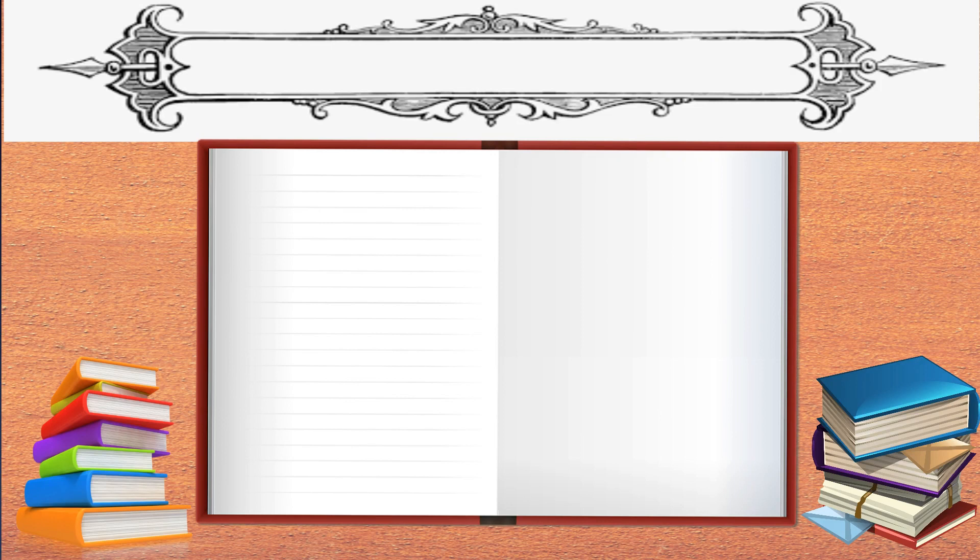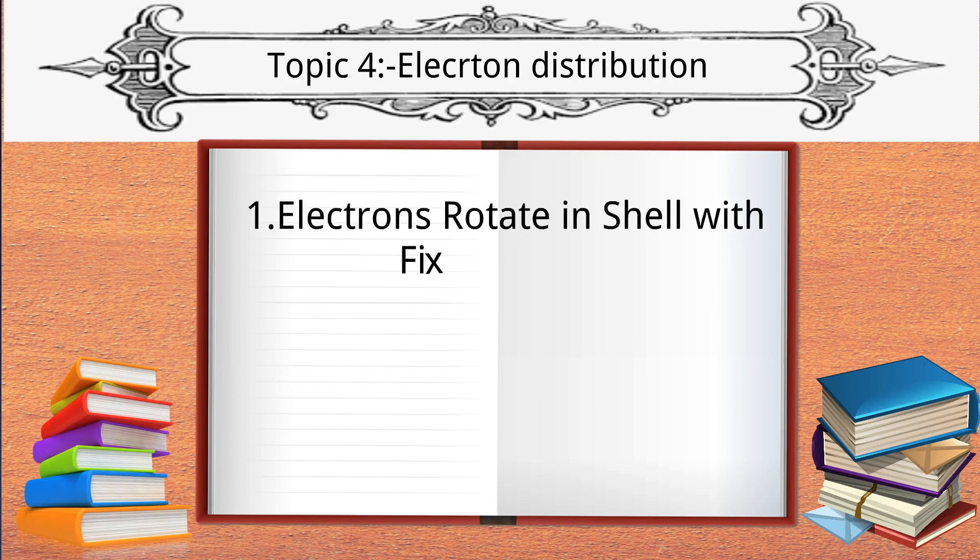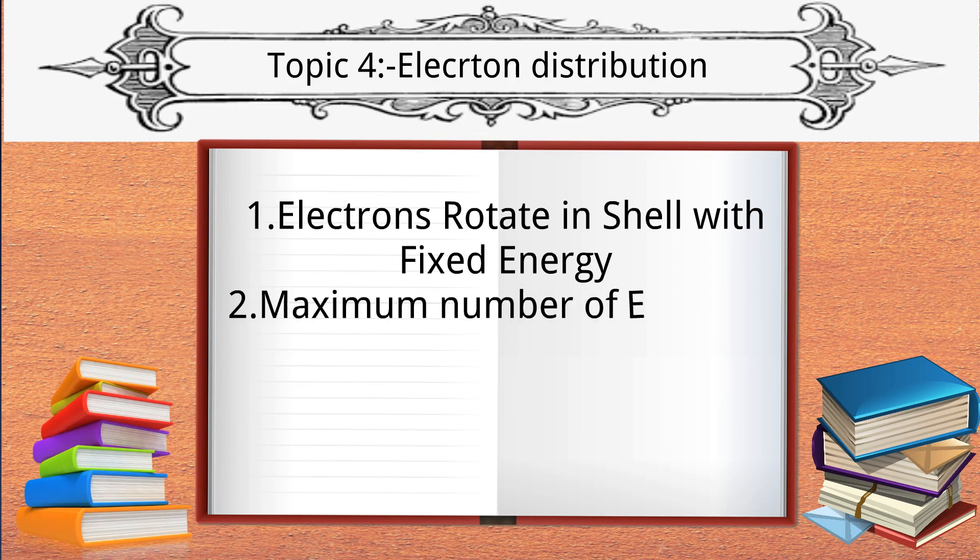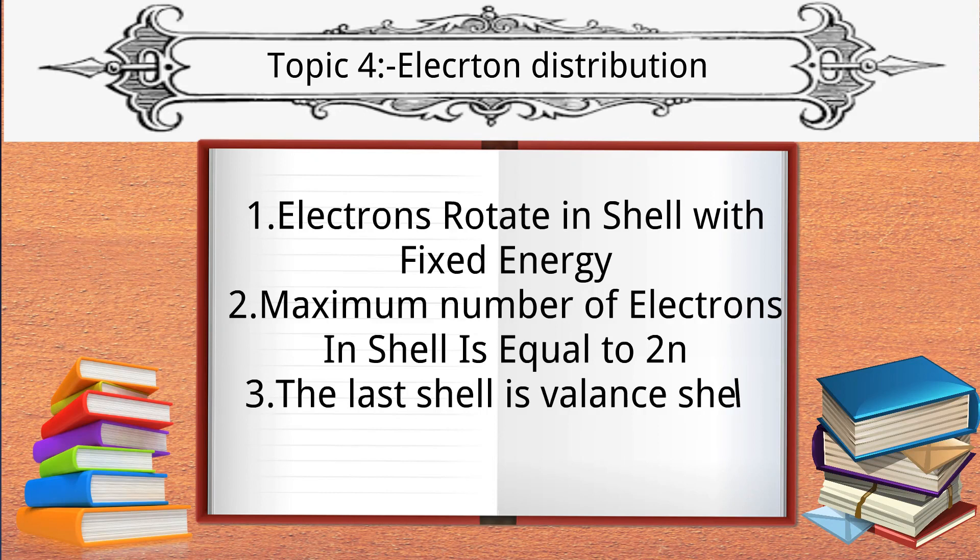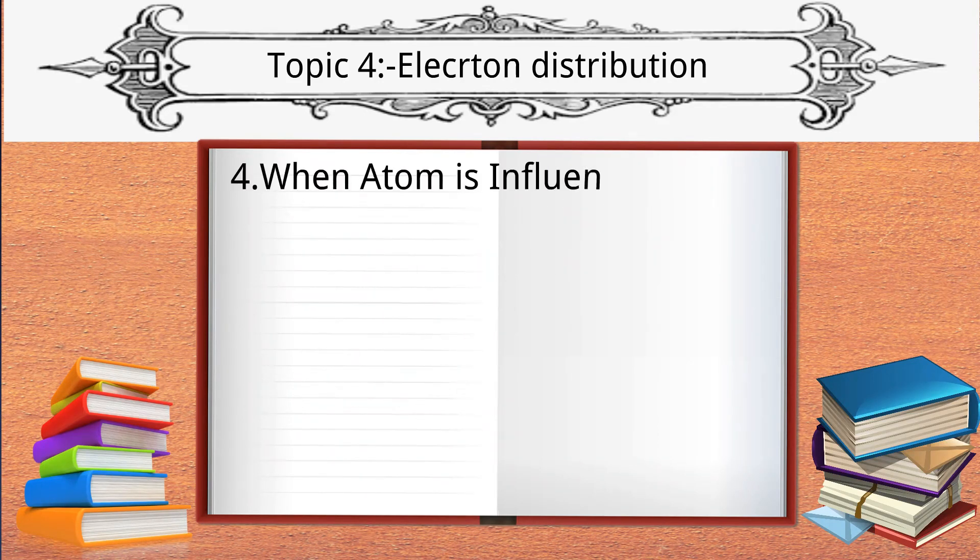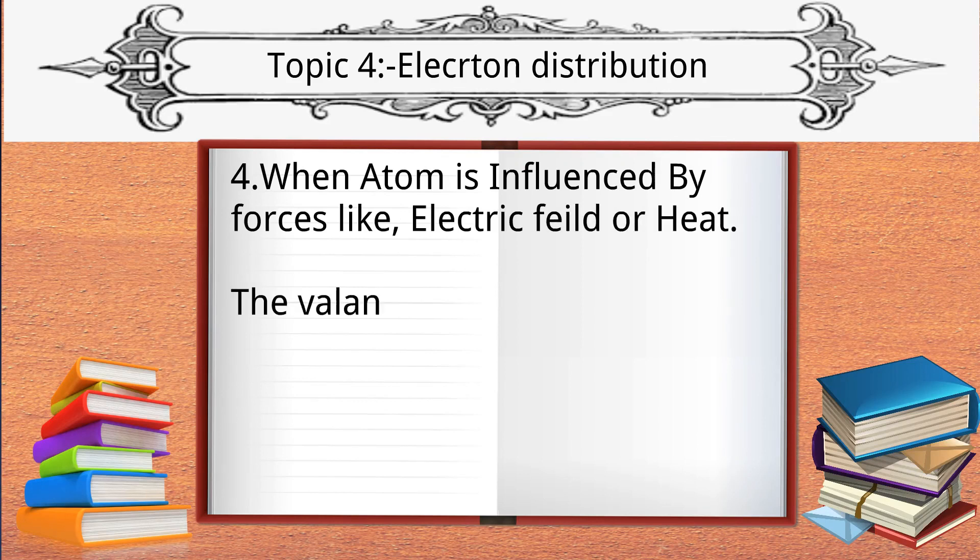Now let's move to the last topic for the day and a very important one: Electron Distribution. Some important postulates of this topic are: electrons rotate in shells with fixed energy. Maximum number of electrons in a shell is equal to 2n², where n is equal to shell number. The last shell is the valence shell.